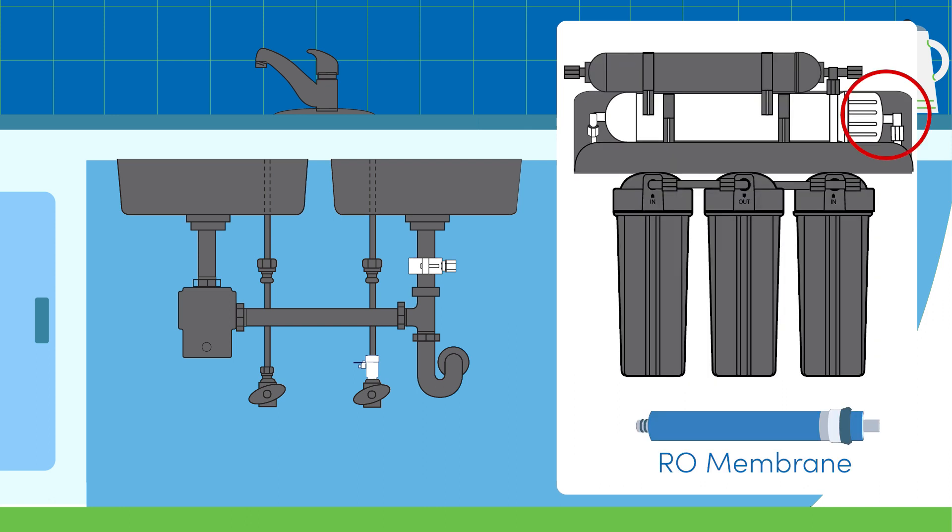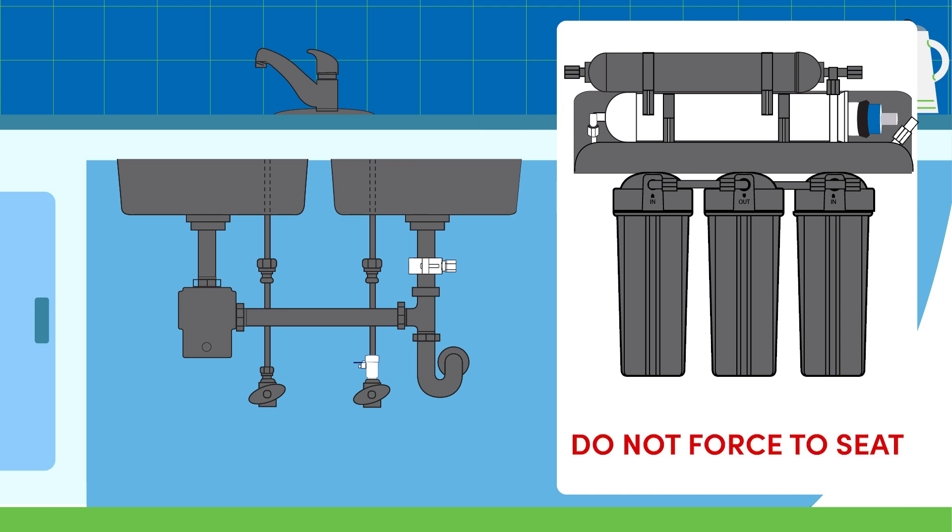Moving to the RO membrane, disconnect the quarter-inch tube connection going into the membrane cap by unscrewing the plastic nut counterclockwise. Remove the blue membrane from its packaging, then insert the membrane end with the two O-rings into the housing until it clicks in place. Do not force the membrane to seat. Reinstall the membrane housing cap by screwing it clockwise until firmly in place, being careful not to overtighten. Reinstall the quarter-inch tube connection by screwing the plastic nut clockwise until tight.